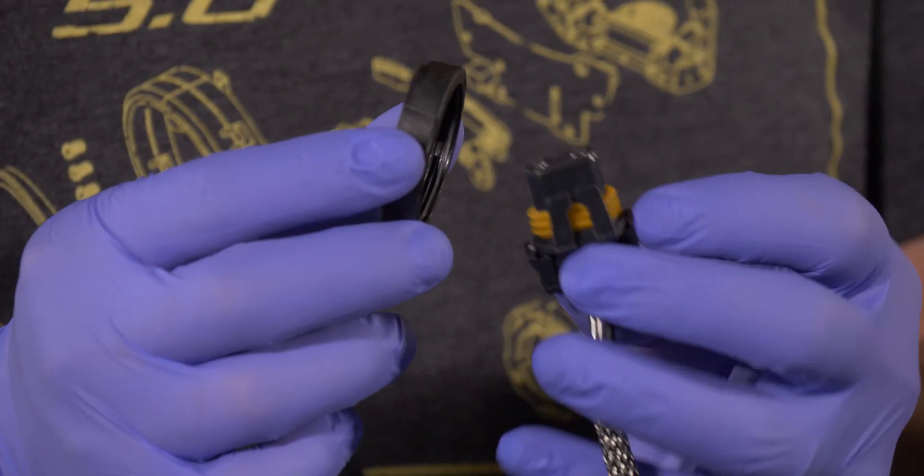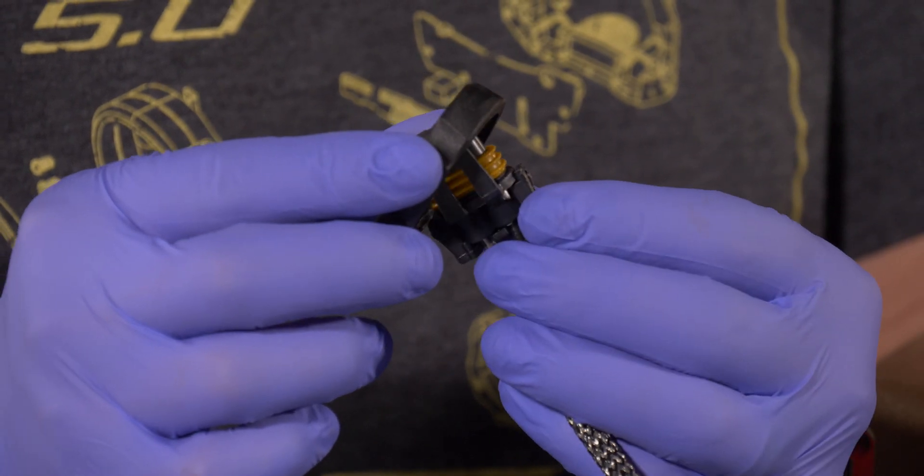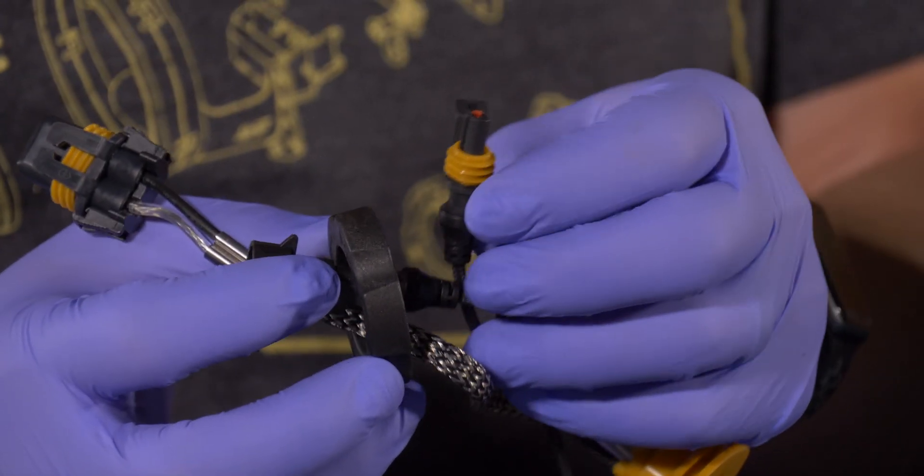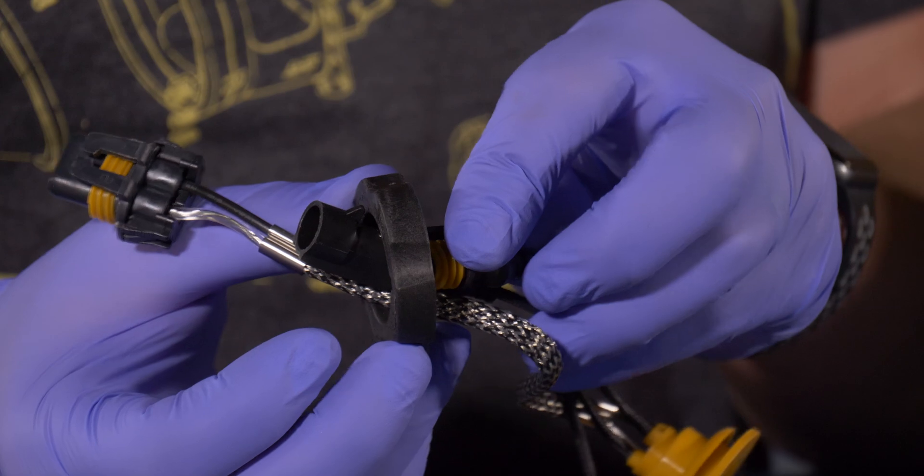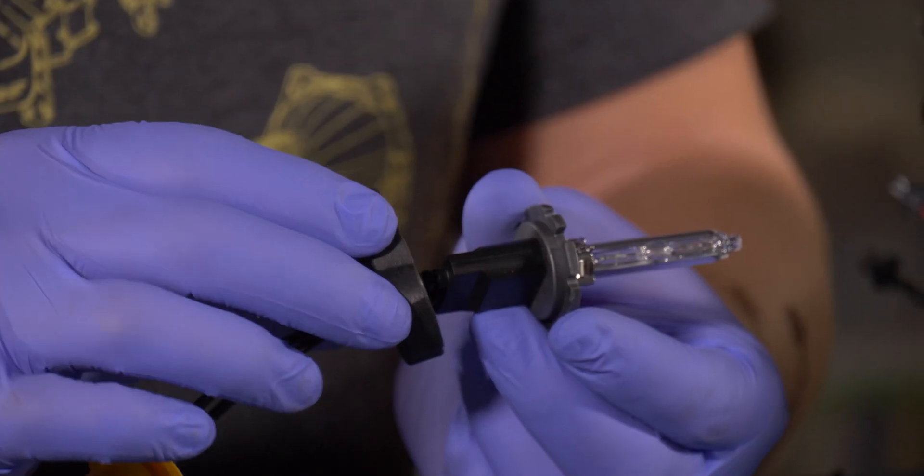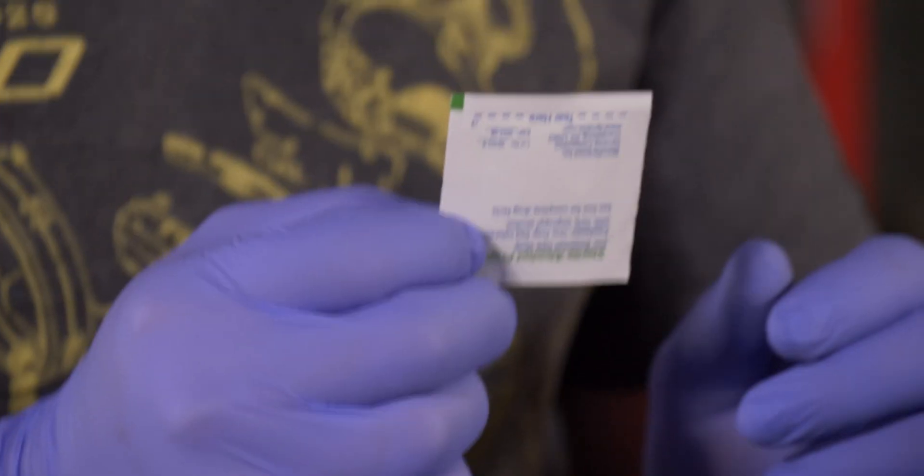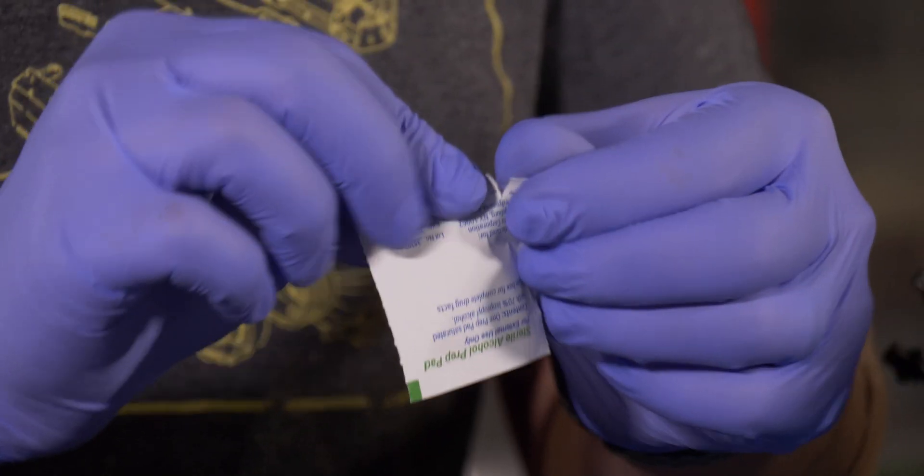First step is to take your bulb holder and start with the bigger plug. After you have that through, you can continue and thread the other wires through. Once you have that on, it's a good idea to take an alcohol prep pad and wipe down the bulb capsule.